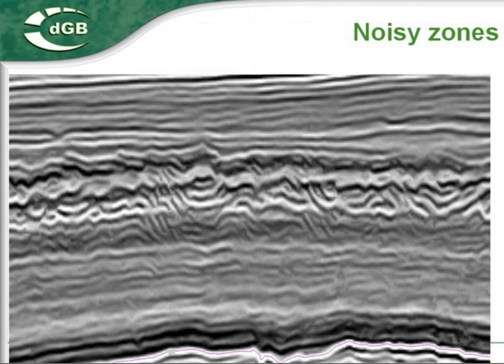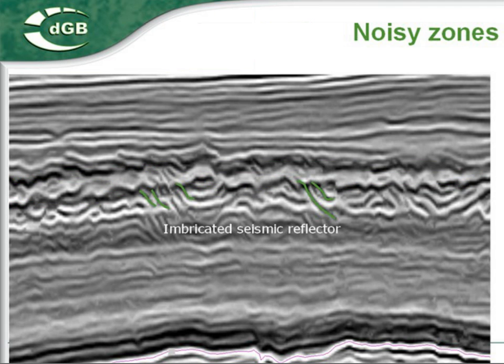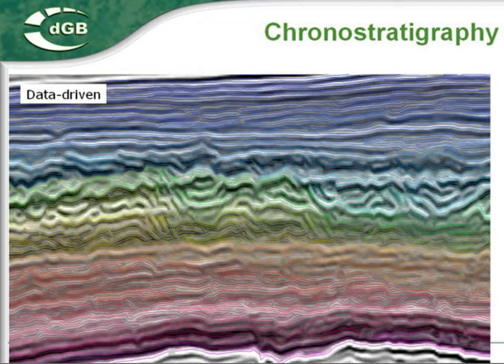The data-driven algorithm does not perform very well in noisy zones. Since the algorithm tries to follow the dip-azimuth estimate everywhere, the grounor stratigraphy in this zone will comprise many small grounor stratigraphic horizons that are not a good representation of the true depositional history.